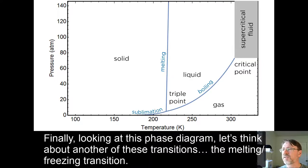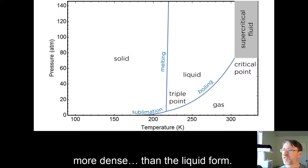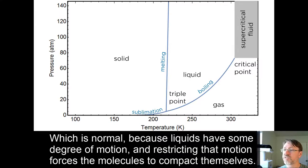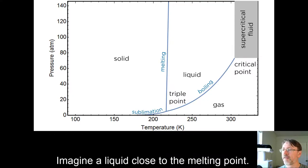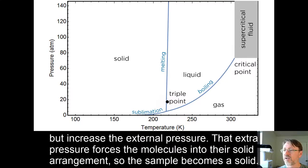Finally, looking at this phase diagram, let's think about another of these transitions, the melting freezing transition. Notice how this line is sloping ever so slightly to the right. This is because the solid form of carbon dioxide is more compact, more dense than the liquid form, which is normal because liquids have some degree of motion. And restricting that motion forces the molecules to compact themselves. Imagine a liquid close to the melting point. Now, don't change the temperature, which means you don't modify the kinetic energy the molecules have at all, but increase the external pressure. That extra pressure forces the molecules into their solid arrangement, so the sample becomes a solid.